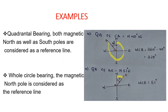In summary, for Quadrantal Bearing, both the north pole and the south pole are considered as the reference. For Whole Circle Bearing, only the north pole is considered as the reference — it is our only reference when using the Whole Circle Bearing. Thank you guys for your time, see you next time.